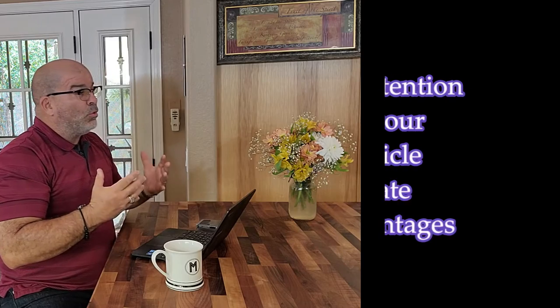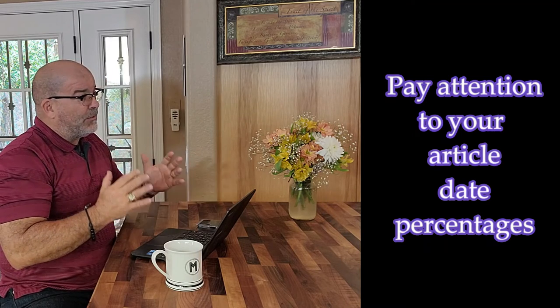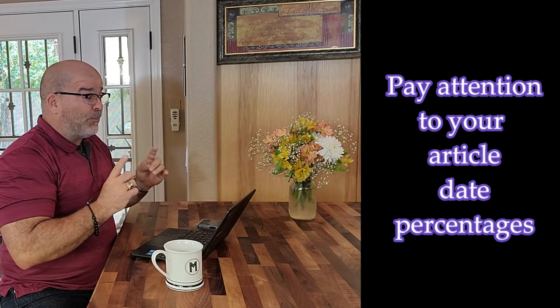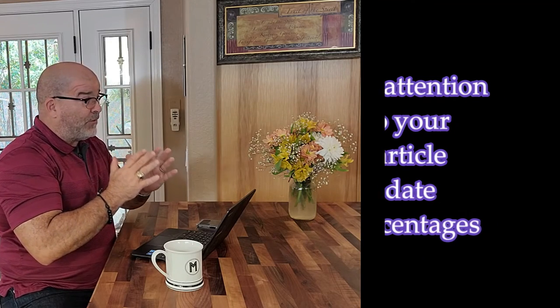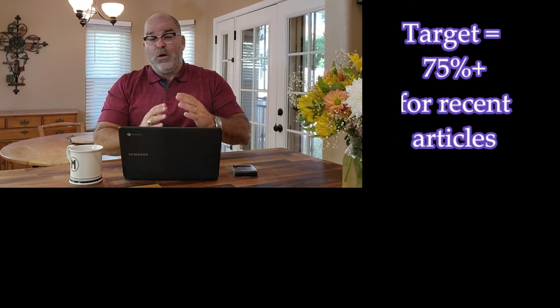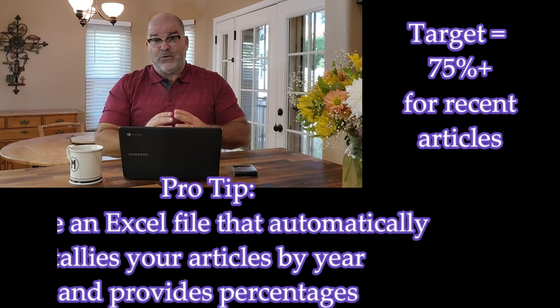Similarly, if you were studying distance learning in elementary education back then versus distance learning now in elementary education, the literature and environment may also be different. While you're creating the problem space with the review of literature, it's important to keep an eye on the percentages of your resources that are within five years of your graduation date. A good target is 75% or more of your references in your review of literature and problem space within those five years.